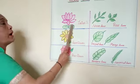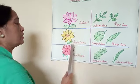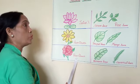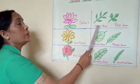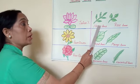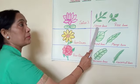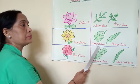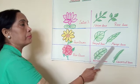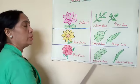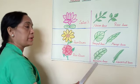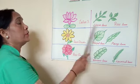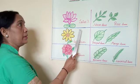Flowers: lotus, sunflower, rose. Small leaves: neem, rose. Big leaves: peeple, mango. Very big: banana and coconut.